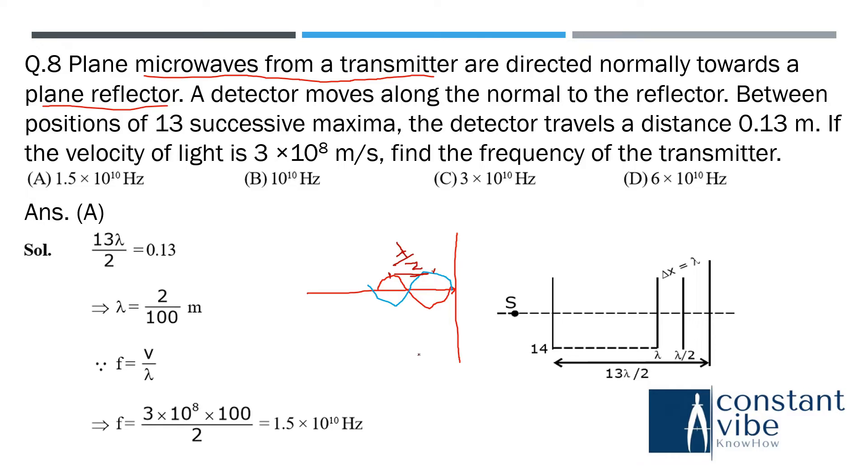So here what is mentioned: between positions of 13 successive maxima the detector travels a distance of 0.13 meter. So here, 13 into lambda by 2 equal to 0.13. This is the one. So you will get 2 by 100 is the lambda. So the frequency is equal to v by lambda, so it will be this one. OK, so the answer is A.